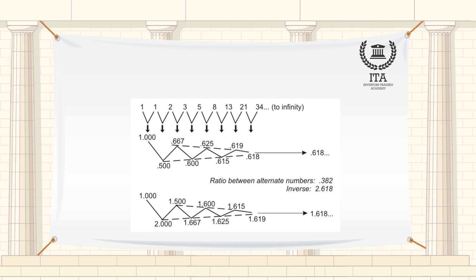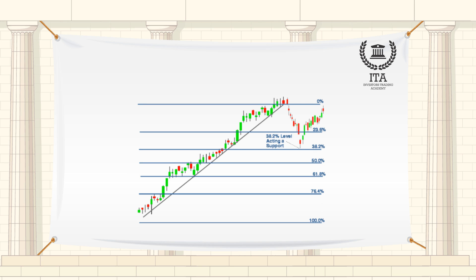The Fibonacci numbers and ratios have been famous among mathematicians and artists for hundreds of years. They represent many things in nature and in financial markets and can be used as great analytical tools. No math is required to use these numbers, as the trading platforms do all the calculations for us. All that we must do is make a decision based on these lines, which appear on the graph.